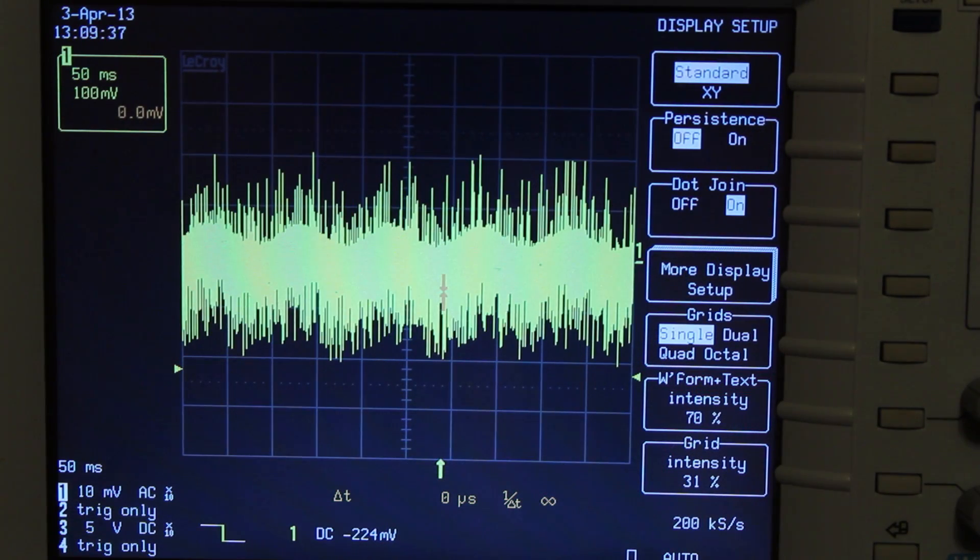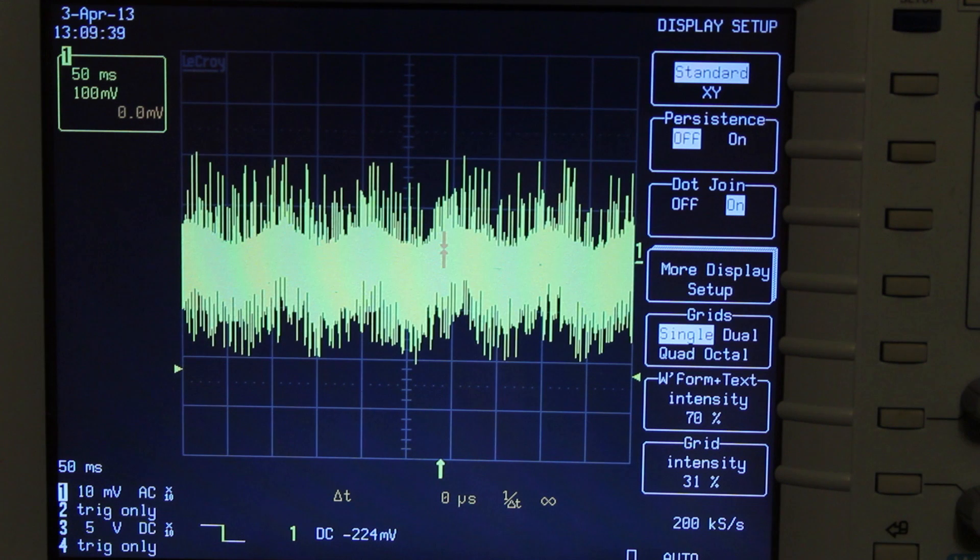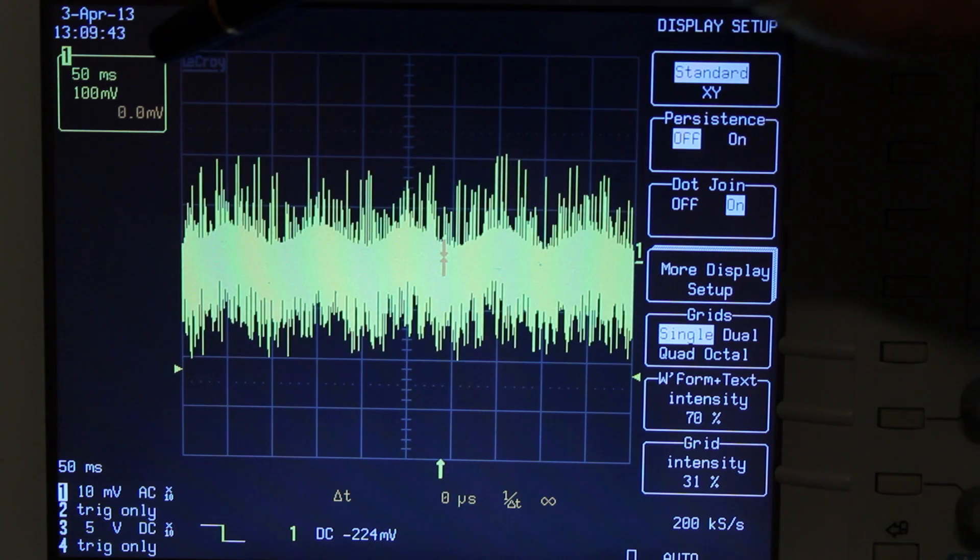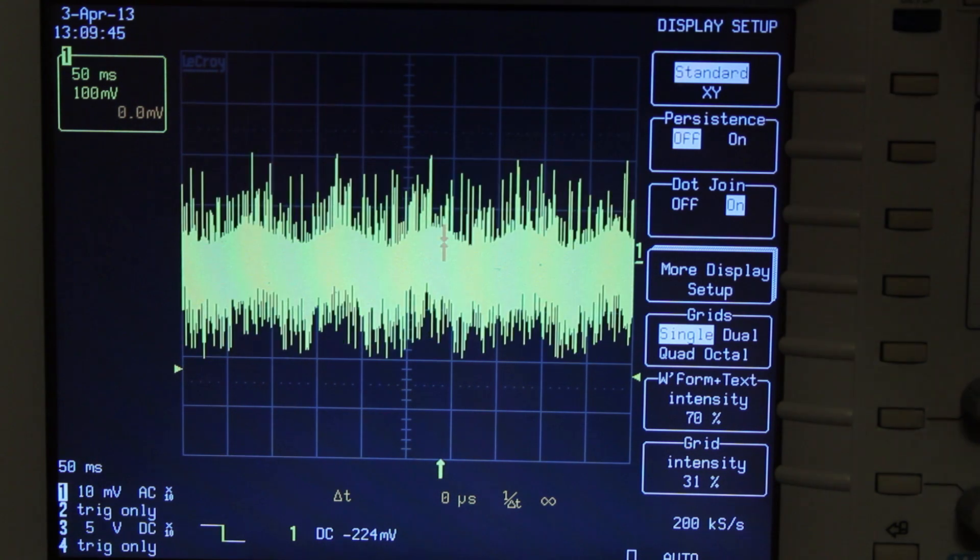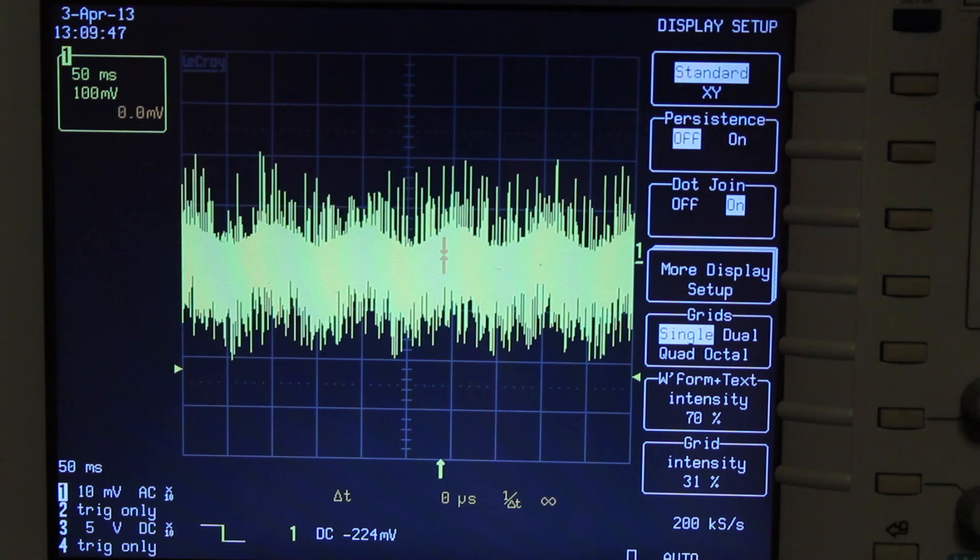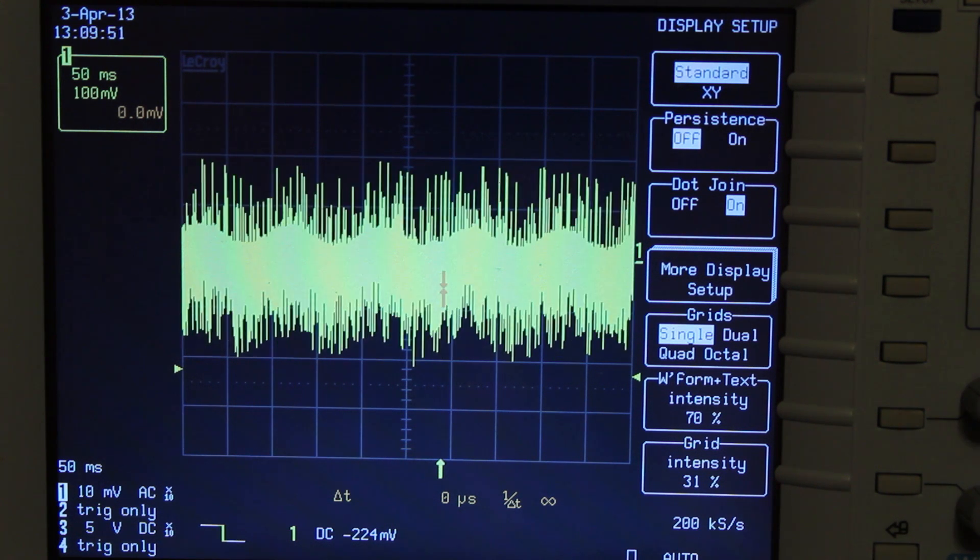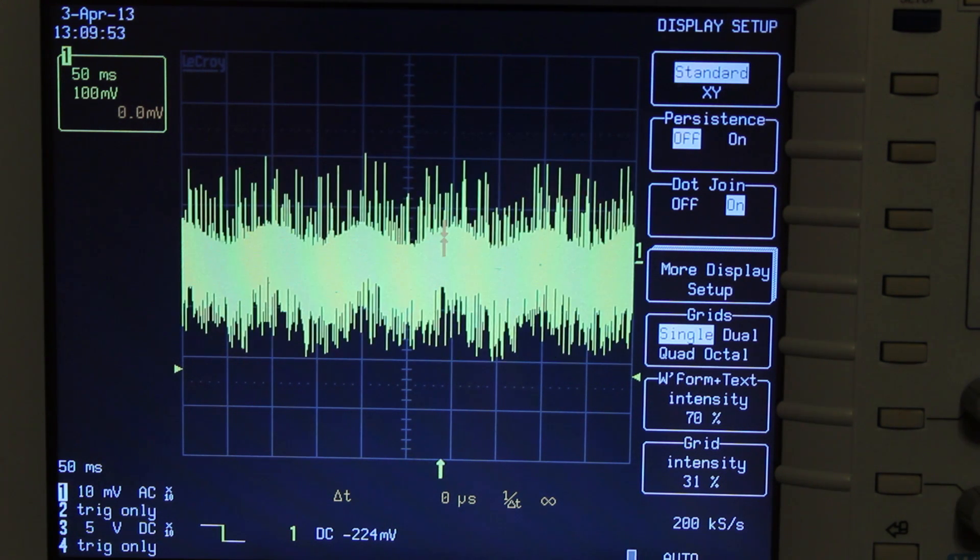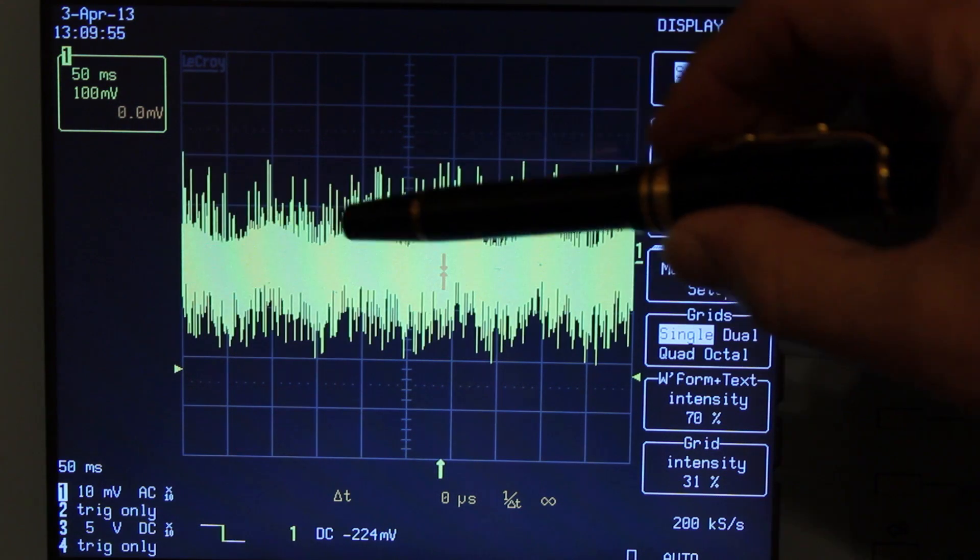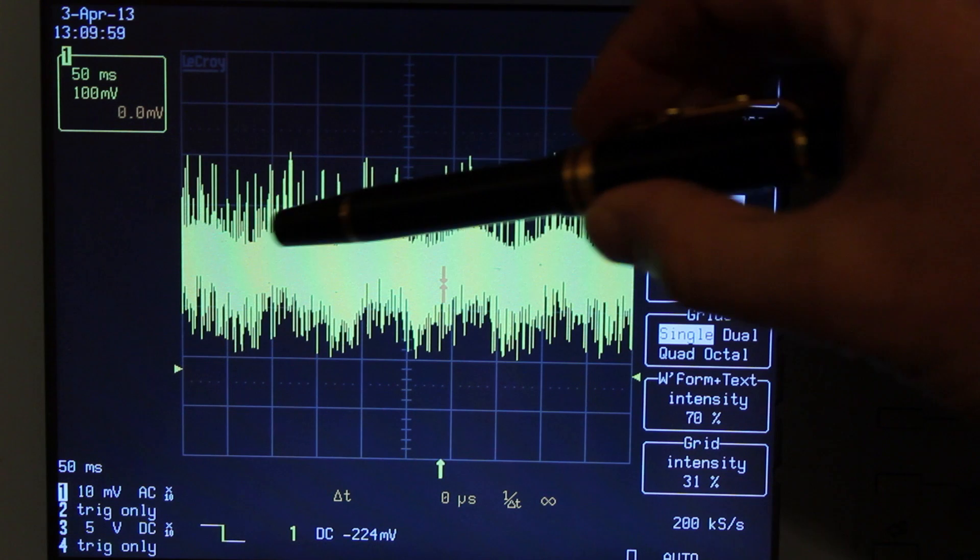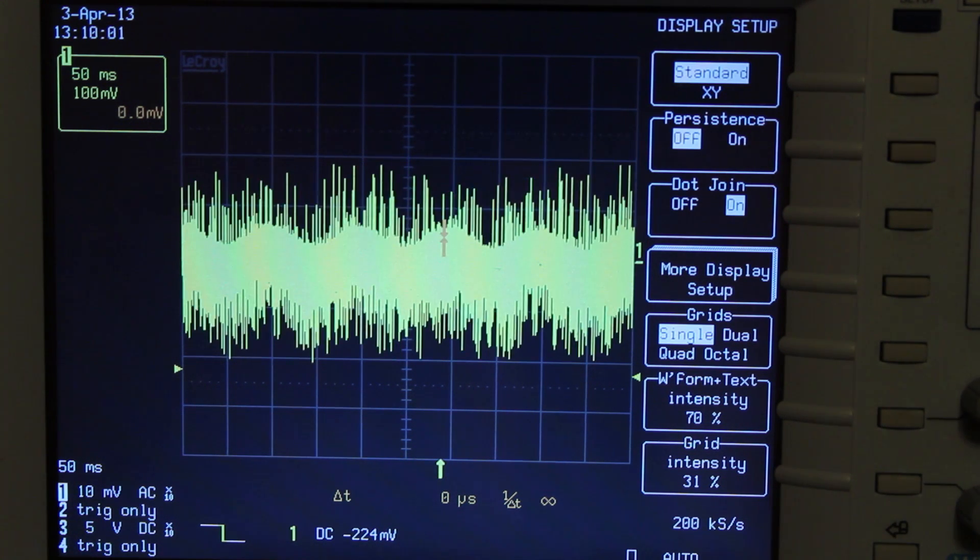Right now what we're looking at on the oscilloscope is the output voltage of a power supply. The scale right here you can see is 50 milliseconds per division and 100 millivolts per division. As you see from the traces here, we've got lots of things going on all at the same time. Along the top of the trace here, you can see a 10 hertz modulation envelope, which is something we're going to have to measure.